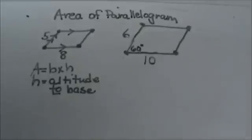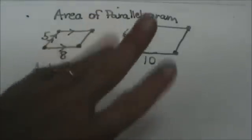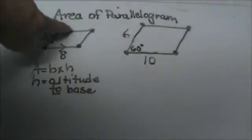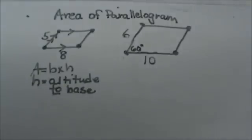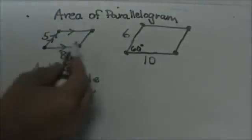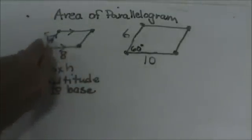First of all, we need to know what is a parallelogram. A parallelogram is a quadrilateral which means it has four sides and it also has opposite sides that are parallel, and that makes a parallelogram. Up here we have a parallelogram whose sides are 8 and 5.